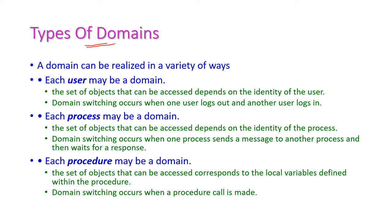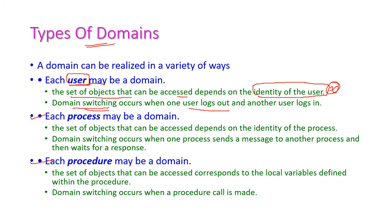Next, let us see the types of domains. Broadly, there are three types: user domain, process domain, and procedure domain. In user domain, the set of objects that can be accessed depends on the identity of the user. Domain switching occurs when one user logs out and another user logs in.